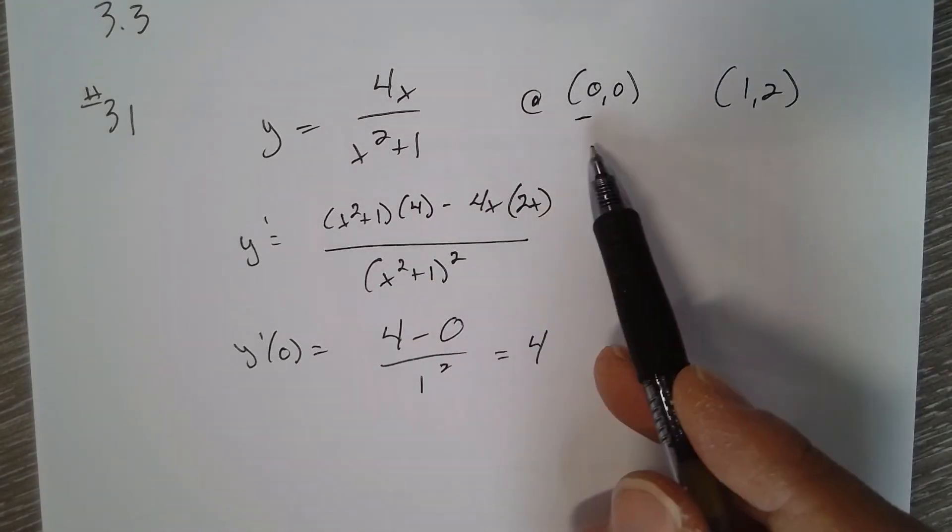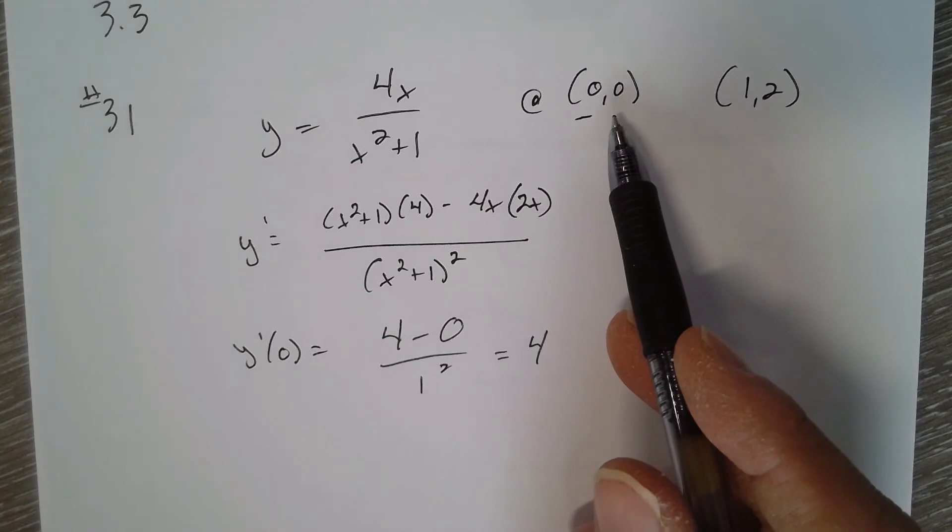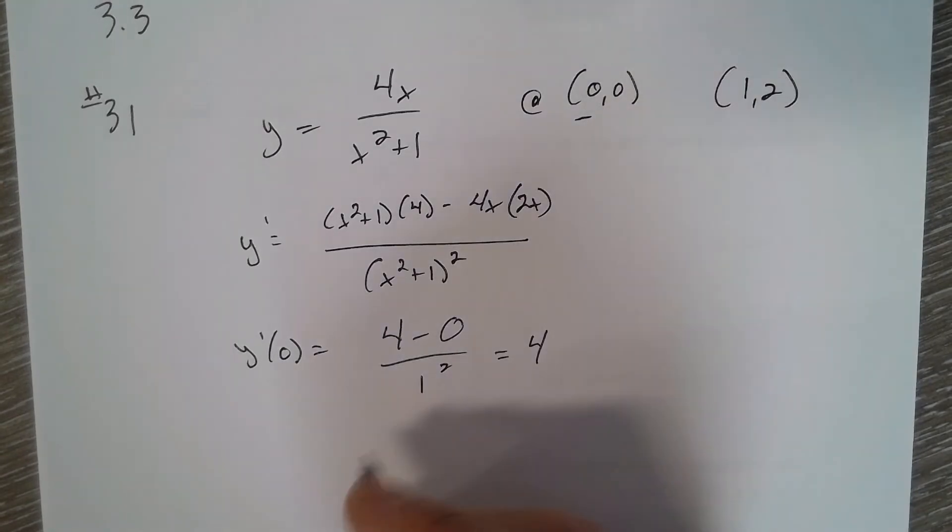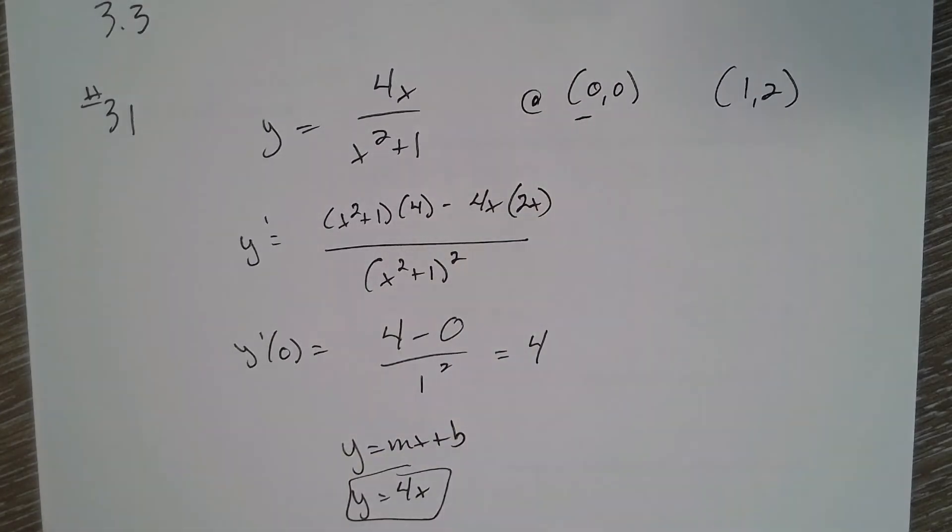So the slope is four at zero zero. Well I already know what the y intercept is, it's zero. So y equals mx plus b, y equals four x plus zero. So there's the tangent at the origin zero zero.